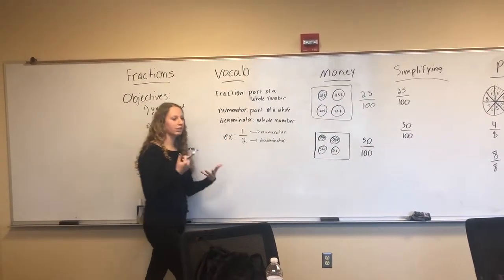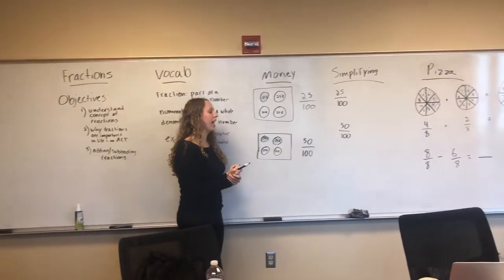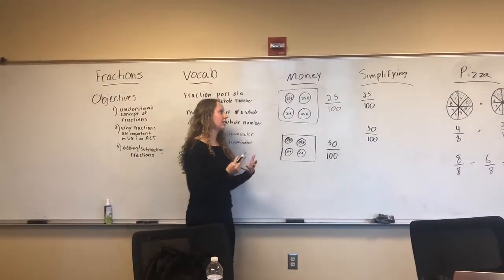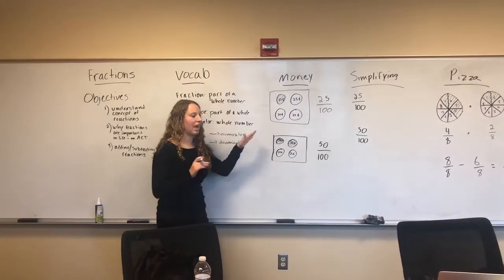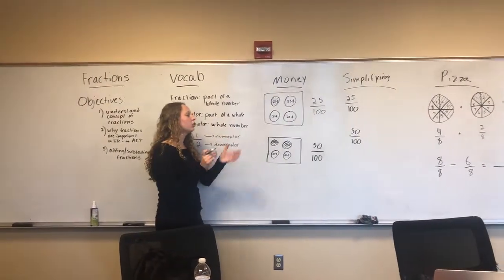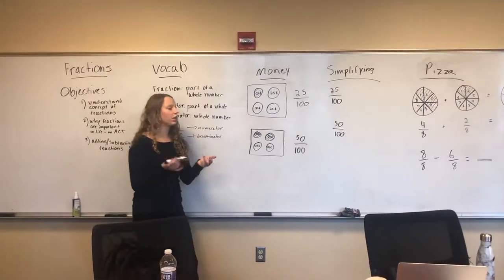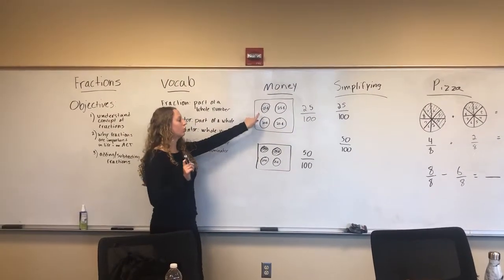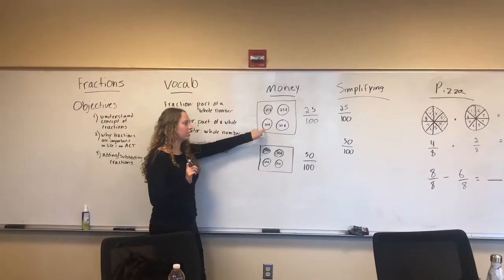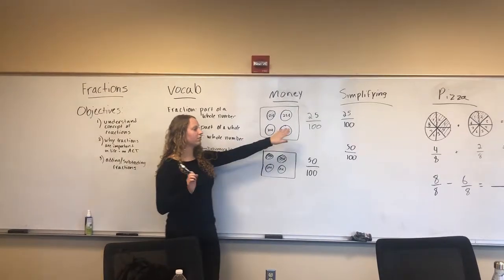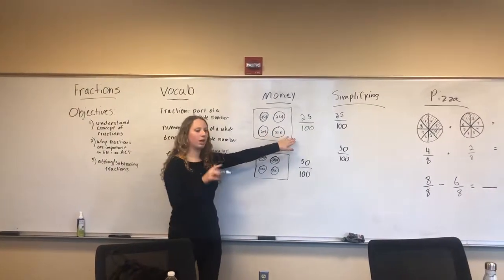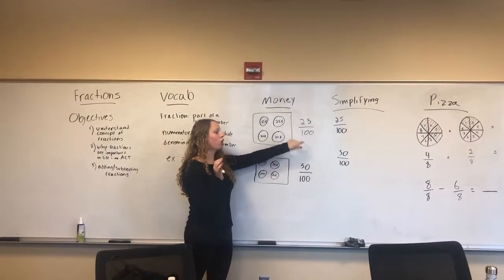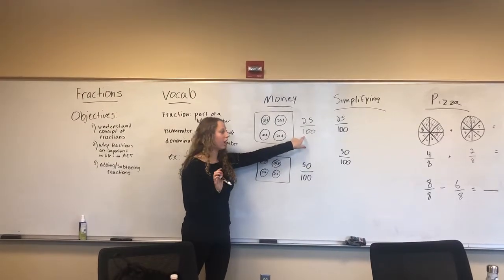There are a lot of different ways in life that fractions apply — baking, measuring ingredients, or telling time — but one that we're going to talk about today is money. So let's say that we have one quarter of a dollar. One quarter is equal to 25 cents, so we would have four quarters each of 25 cents. When we write that as a fraction, we would have the 25 cents over the total 100 cents in a dollar.